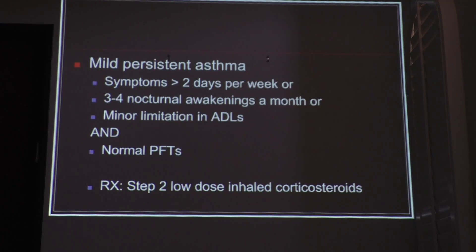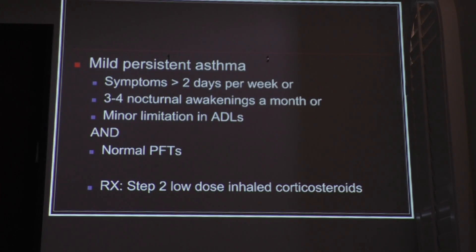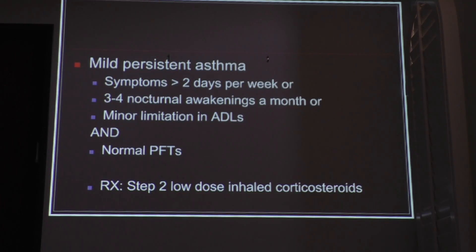QVar comes in 40 and 80 micrograms per inhalation, probably twice a day. You may offer it only during the winter months or the first six months of the year when patients have seasonal allergies. The generic for QVar is beclomethasone. If they really have asthma, they need to get better. If they don't get better, you need to figure it out. Some doctors give steroids empirically — if you get better, you probably have asthma — but you shouldn't do that. Always get PFTs.